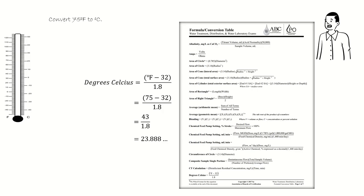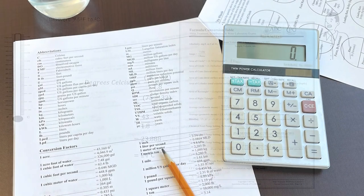Rounding to significant figures, that's equal to approximately 24 degrees Celsius. Therefore, 75 degrees Fahrenheit is the same as 24 degrees Celsius.